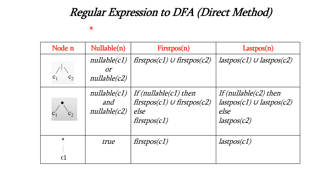Now let us understand about the functions nullable, first position and last position for the node n. Here node n refers to the basic operators of regular expressions, which are the OR operator, concatenation operator, and Kleene closure operator. Considering the nullable of the OR operator, it will be nullable of C1 OR nullable of C2 — that is, the OR node will be nullable if either C1 is nullable or C2 is nullable.